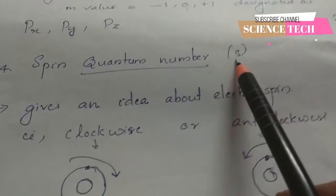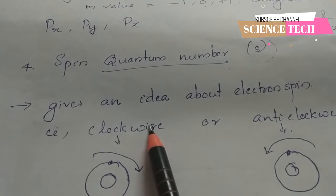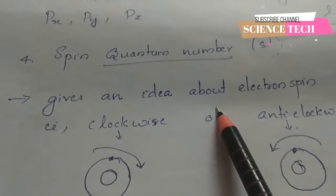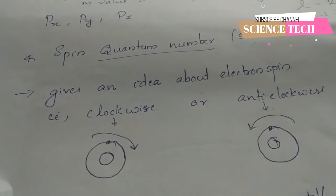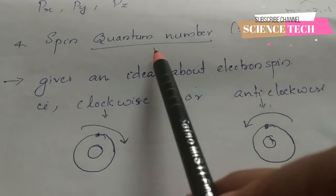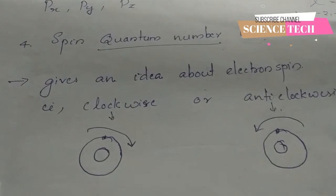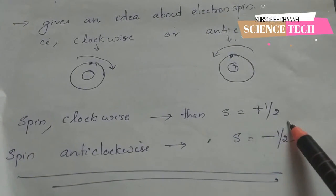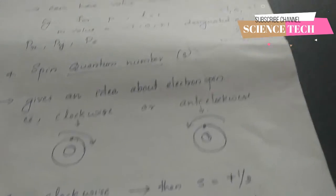The last one is the spin quantum number, represented by small letter s. An electron can spin in a clockwise direction or an anticlockwise direction. The spin quantum number value for clockwise direction is plus half, and for the anticlockwise direction it is minus half.